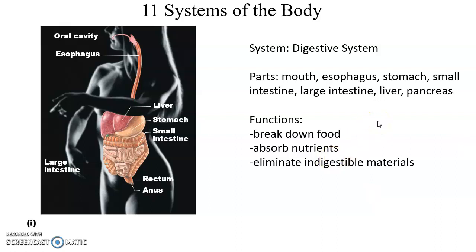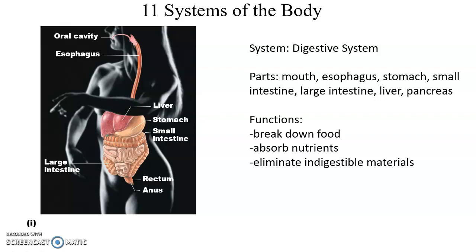The digestive system includes the mouth and oral cavity, esophagus, stomach, small intestine, large intestine, liver, and pancreas. Its function is to bring in food, break it down both physically and chemically into small pieces, absorb the important nutrients into the bloodstream, and then eliminate whatever is left over.